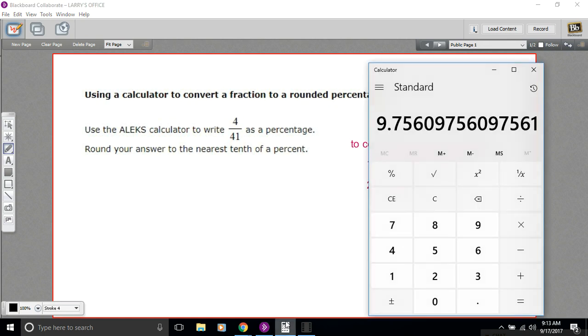Let's see what happens when we do that here. I've got 4 divided by 41, and I get this 0.0975, etc. And then I multiply by 100.